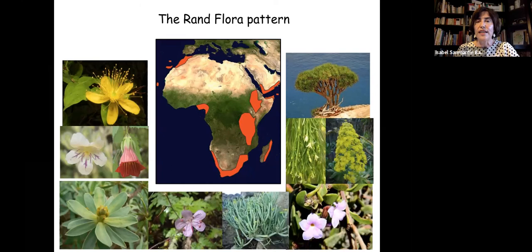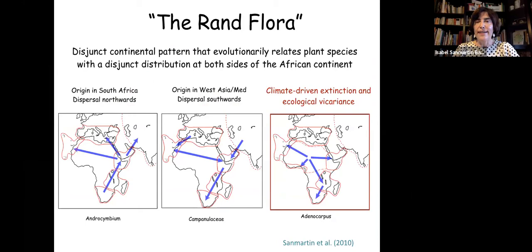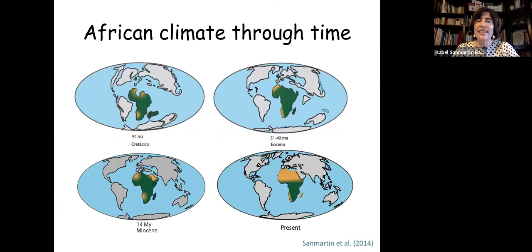The Rand Flora was traditionally explained by three different hypotheses. Two involve dispersal — migration probably during Pleistocene times from a center of origin either in South Africa or in the Mediterranean/western Asia region, moving either northwest or southwest. The third, even older hypothesis, now more prominent, is that the pattern is explained by climatic extinction: these relict species living on the sides of the African continent are survivors of a climatic extinction, now forming a ring pattern — linked to ecological vicariance.